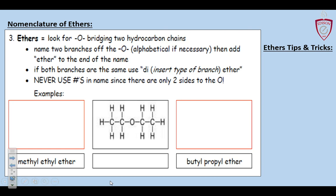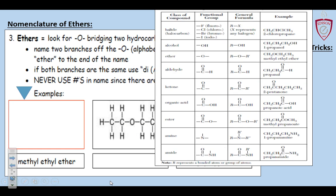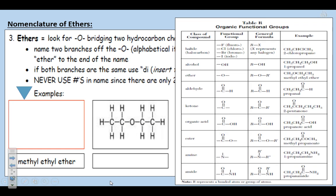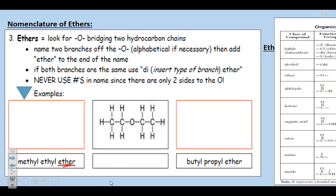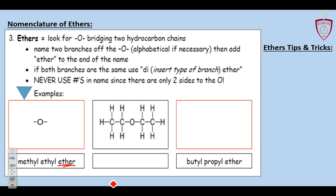One's a methyl and one's an ethyl. If you rotate the thing, there it is — we have an ether in the middle. I'm looking right on the reference table to find a name that ends in 'ether.' There it is, and now I know I'm going to start with this O in the middle. There's an O in the middle, and on one side I'm going to have a methyl group — one carbon. On the other side, an ethyl group — two carbons. There's your methyl ethyl ether.